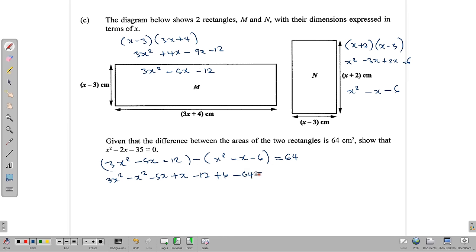Let's tidy this up now. 3x squared minus x squared here gives us 2x squared. Minus 5x plus x gives us minus 4x. And minus 12 plus 6 gives us minus 6. And minus 6 and minus 64 gives us minus 70. So this is what we end up with when we tidy these things up. 2x squared minus 4x minus 70 equals zero. But notice this is not that. This is x squared minus 2x minus 35.